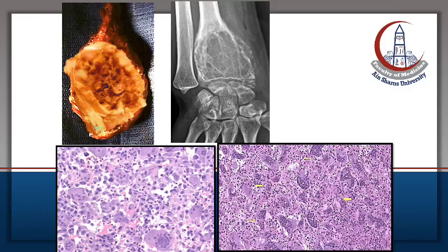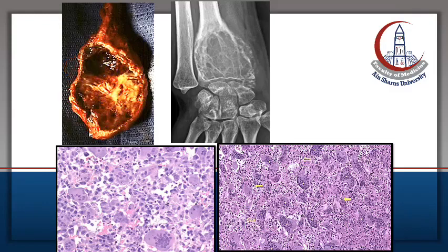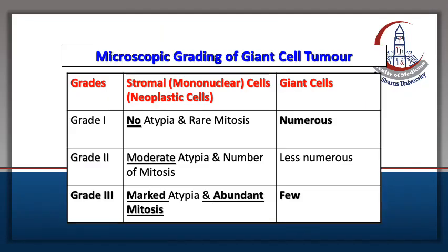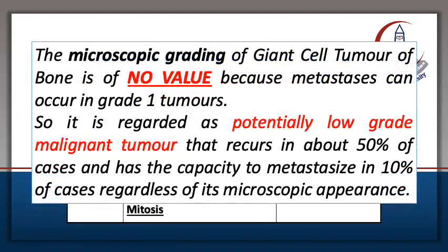The gross appearance shows an epiphyseal tumor with soap bubble calcification. Under the microscope there are two cell components: mononuclear and giant cells. A grading table differentiates grades of giant cell tumor by the two component cells. However, grading has no value because it is a potentially low-grade malignant tumor, with local recurrence in about 50% of cases and metastasis in 10% of cases regardless of grade.